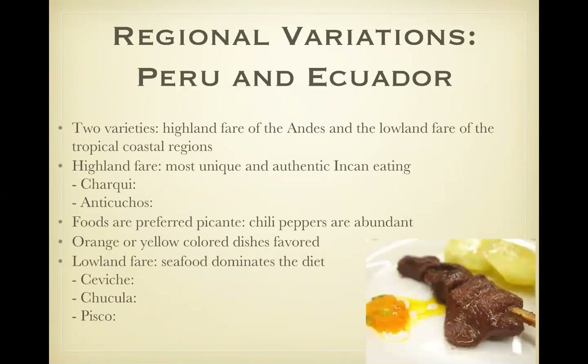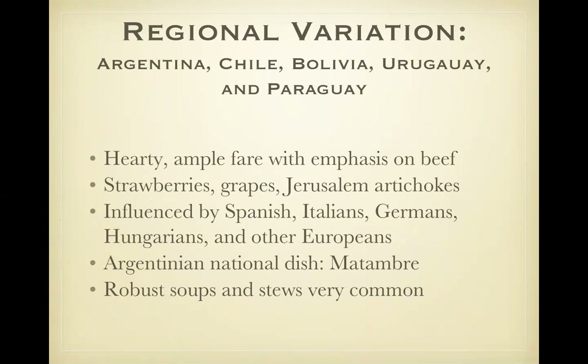Peru and Ecuador. There are two varieties of cooking: the Highland Fairs of the Andes and the Lowland Fairs of the Tropic Coasts. The Highland Fairs represent the most unique and authentic Incan eating. They have charcouille — dried strips of llama meat. They also have anticuchos, pictured there, which are chunks of beef heart marinated in vinegar with chilies and cilantro, skewered and grilled — very popular in the Andes. Other foods include ceviche — fish or seafood marinated in lime — chucula, a thick plantain and milk beverage spiced with cinnamon, and pisco, a grape brandy.